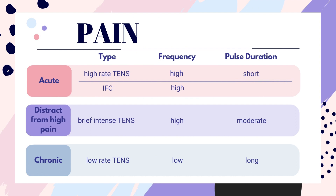Starting off with e-STEM for pain, there are different types of pain we're going to be looking at: acute pain, distracting from really high pain, and chronic pain. Each of these different types of pain will have a different type of e-STEM, and then frequency and pulsation. For acute pain, you're going to use high rate TENS or IFC, which stands for Interferential Current. High rate TENS is also known as conventional TENS. The frequency is going to be on the higher side for both of these for acute pain, so greater than 50, with a short pulse duration, so like 50 to 150. The amplitude will be at a rate that the patient feels a strong sensation but is comfortable.